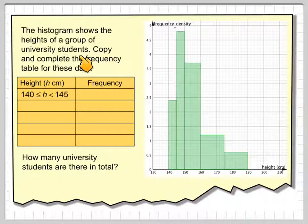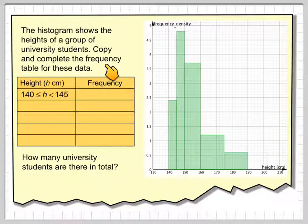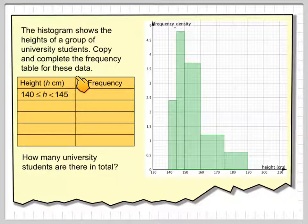The histogram shows the height of a group of university students. Copy and complete the frequency table for these data. We've got this table here that we need to complete, and it asks how many university students are there in total.